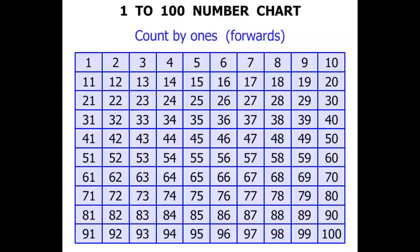Let's start by counting by ones. We're going to count forwards. So starting at 1: 2, 3, 4, 5, 6, 7, 8, 9, 10, 11, 12, 13. Now we could of course continue that on. So you'd be very familiar with that so far.